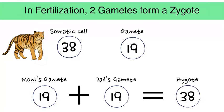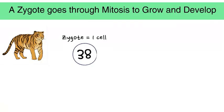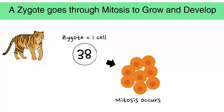What happens to that zygote next? Well, a zygote is only one cell, so that cell has to go through mitosis until it has grown and developed into a new organism.